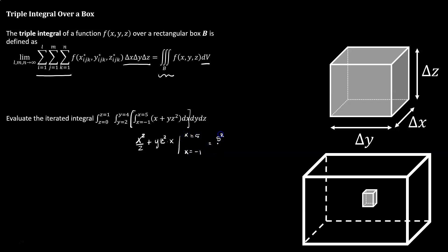So we get 5 squared over 2 plus yz squared times 5 minus negative 1 squared over 2 plus yz squared times negative 1. We'll simplify that and we get 12 plus 6 times y times z squared. So we'll pull out that inside integral and replace it with that expression.